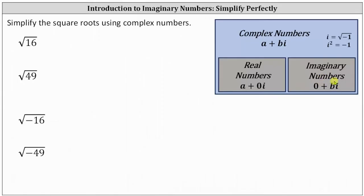The first example: we have the square root of 16, which is the principal square root of 16. This is equal to the positive number squared that equals 16. Because four times four equals 16, we can write this as the square root of four squared. Because positive four squared equals 16, the square root of 16 is equal to four. We can always check the result by squaring four to make sure we get the original radicand of 16, which we do. We can also think of the square root as undoing the squaring.